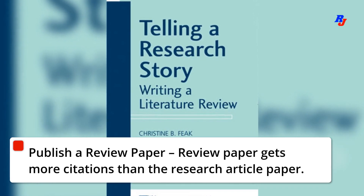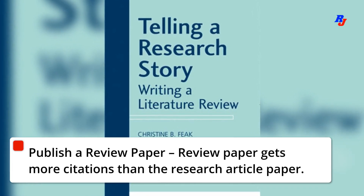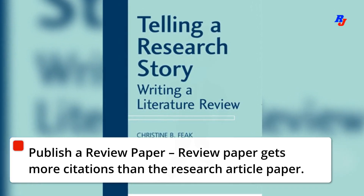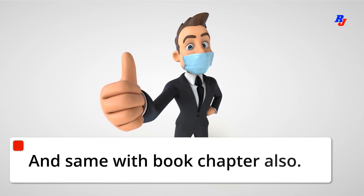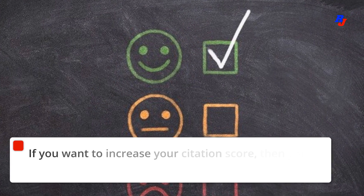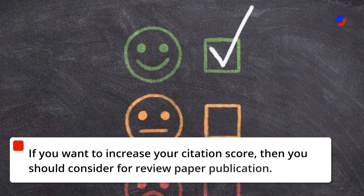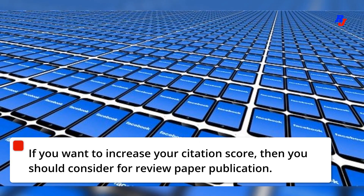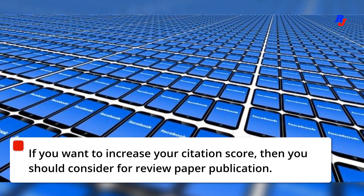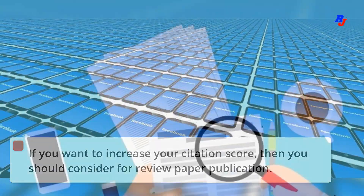Second point — publish a review paper. Review papers get more citations than research article papers, and the same is true for book chapters. If you want to increase your citation score, you should consider review paper publication. Take time, collect data, organize well, and write an excellent review paper.